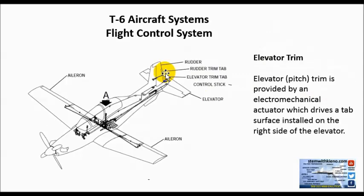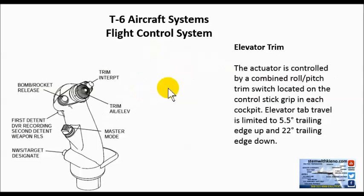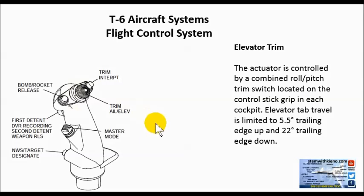Elevator trim is provided by an electromechanical actuator which drives a tab surface installed on the right side of the elevator. Behind the vertical stabilizer, the elevator trim tab is positioned over there. The elevator trim control is this big button on the control stick grip in each cockpit. The elevator tab travels limited to 5.5 degrees up and 22 degrees on the trailing edge down — that will be your aileron deflection upward and downward.